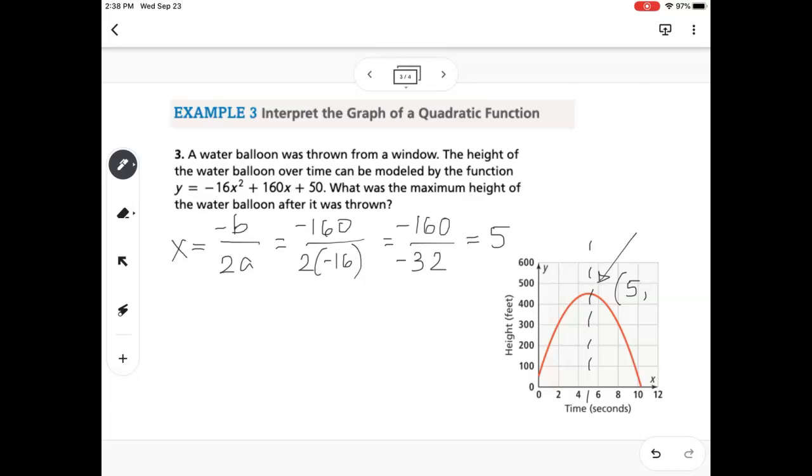So then we take the 5 and we plug it in to find y. So this would be negative 16 times 5 squared plus 160 times 5 plus 50, and we get 450.